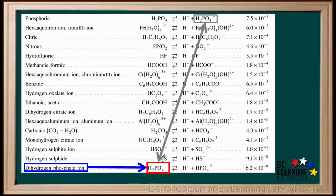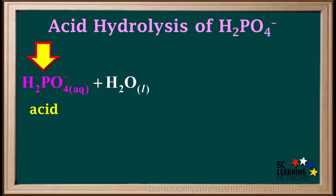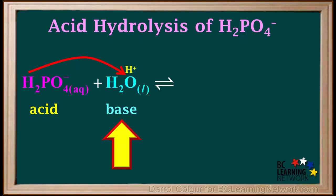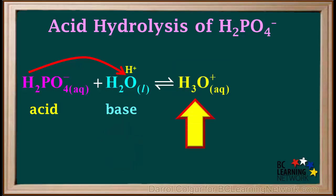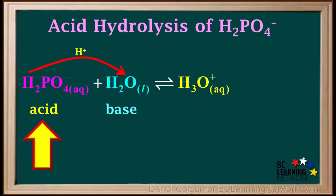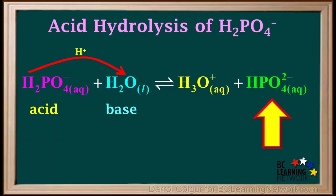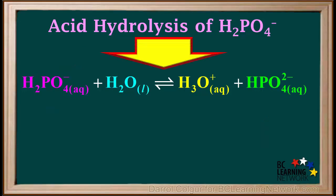Because H2PO4- is on the left side of the acid table, we know it can undergo acid hydrolysis. When H2PO4- undergoes acid hydrolysis, it plays the role of an acid and water plays the role of a base. A proton is transferred from the H2PO4- to the water molecule. When the water gains a proton, it forms its conjugate acid, a hydronium ion, H3O+. And when H2PO4- loses a proton, it forms its conjugate base, HPO4 2-. So this is the equation for the acid hydrolysis of the dihydrogen phosphate ion, H2PO4-.